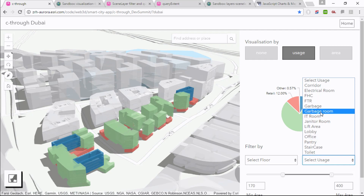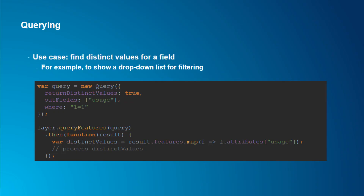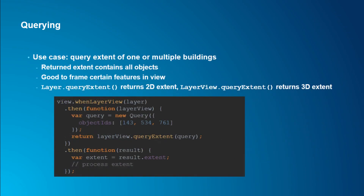To get all distinct values for a given field — for example, to populate the usage type list in See-Through's UI — set returnDistinctValues to true and specify the outFields field you want. Also set a where clause of '1=1' (currently required, likely a bug). The result's features map to just the unique field values, giving you an array of all possible strings for that attribute.